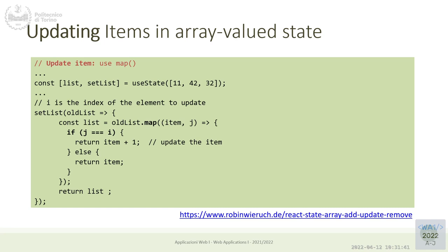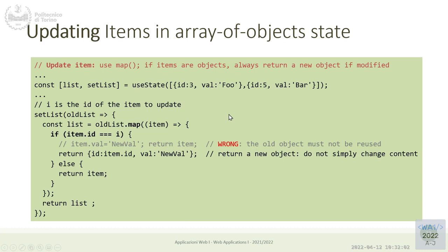Alternatively, it's also possible to create an identical copy using spread and then modify the copy. For modifying an element inside the array, we could use map to reconstruct an array that is identical to the previous one in all elements except at the specific location we want to change. At each position, we ask: do we need to modify it or not? If not, we copy the old value; if yes, we compute the new value.